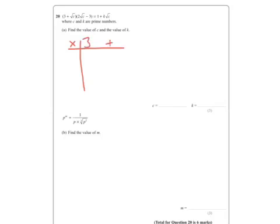So I'm going to do them using a table. 2 root C, minus 3. So here we go. 6 root C, plus 2C, minus 9, minus 3 root C.